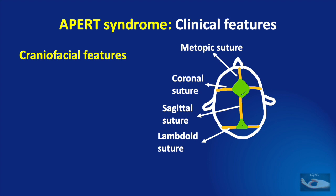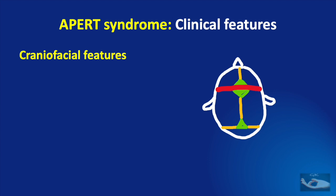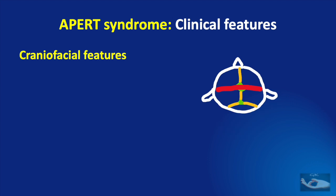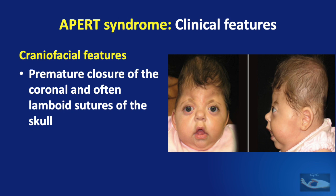These sutures allow the underlying brain to grow normally so that the skull can expand in both the anteroposterior and lateral directions. But if the coronal suture and the lambdoid sutures are fused prematurely, the skull cannot grow in an anteroposterior direction — it can only grow laterally because the sagittal and metopic sutures are still intact. This is what happens in Apert syndrome: premature closure of the coronal and often lambdoid sutures results in a skull that grows only laterally.